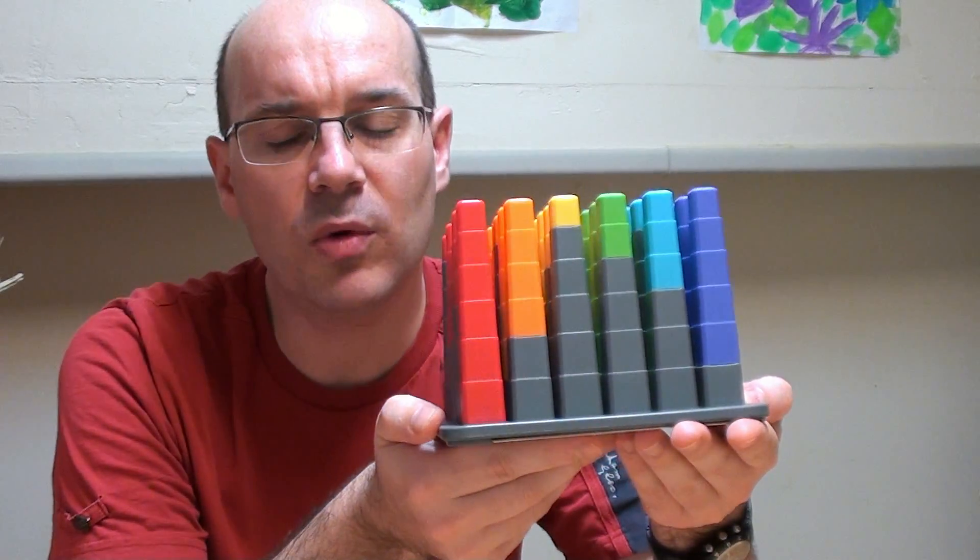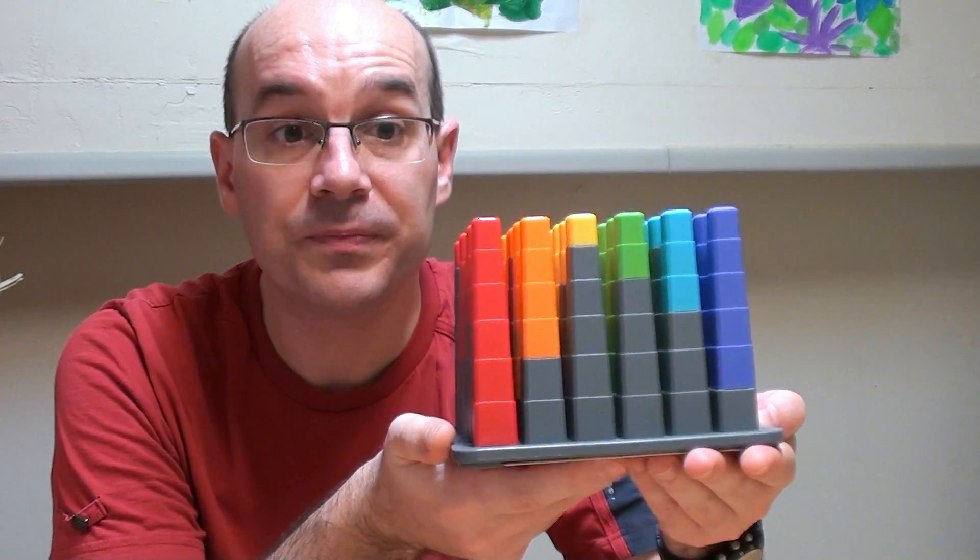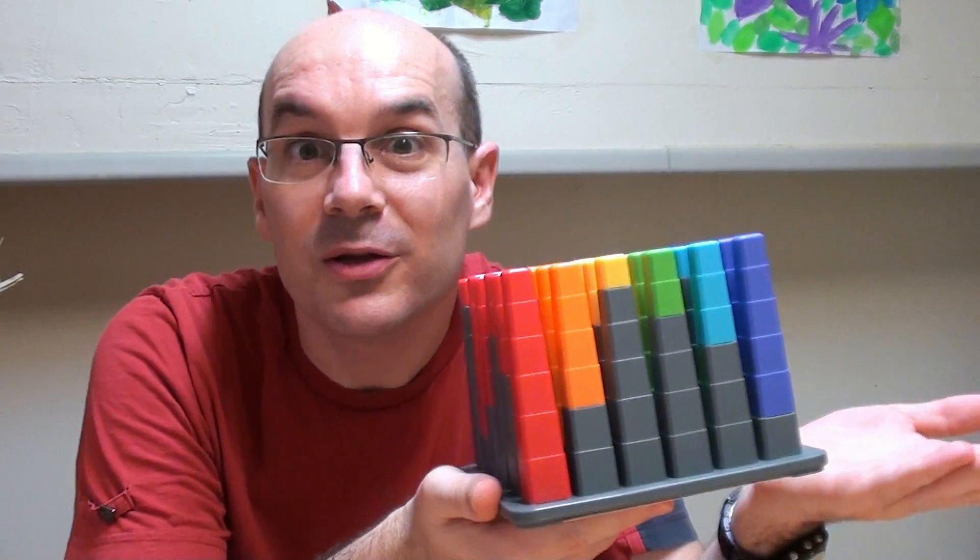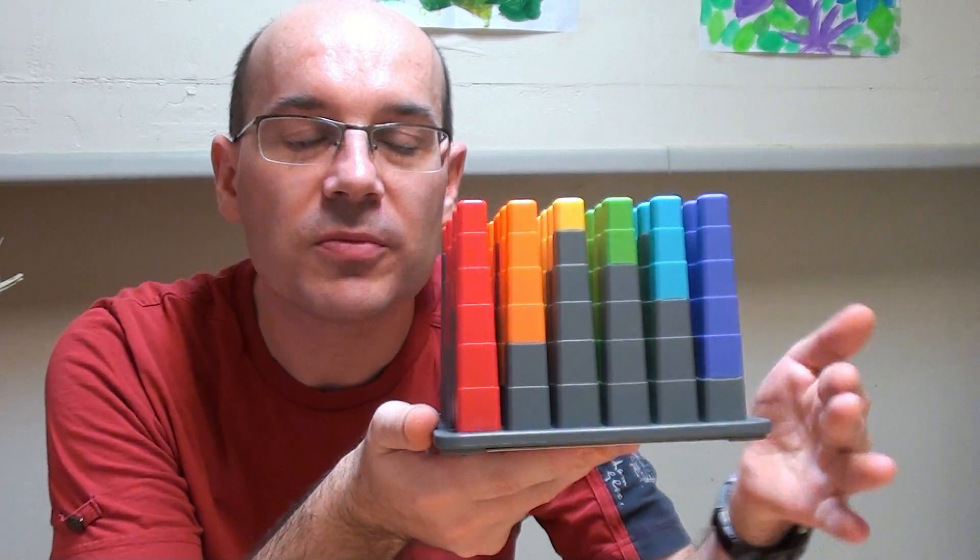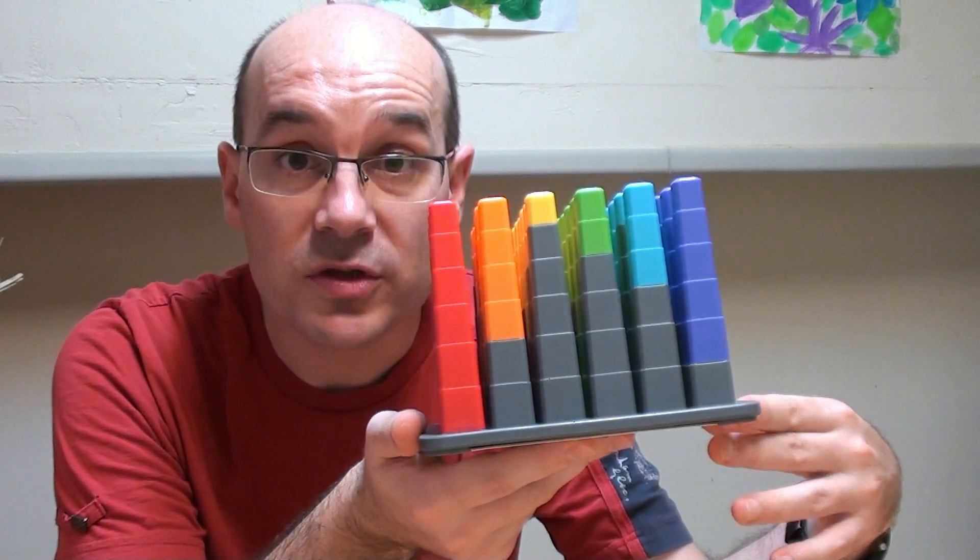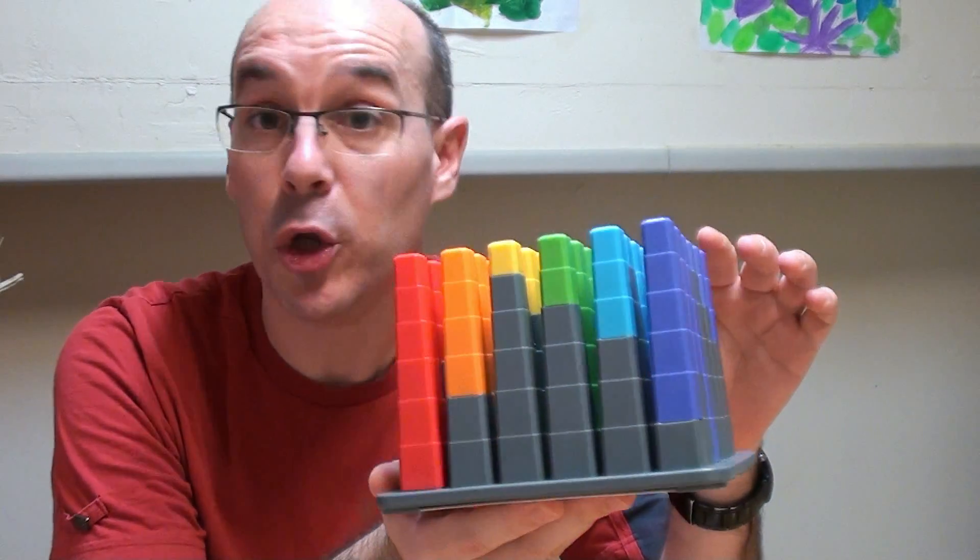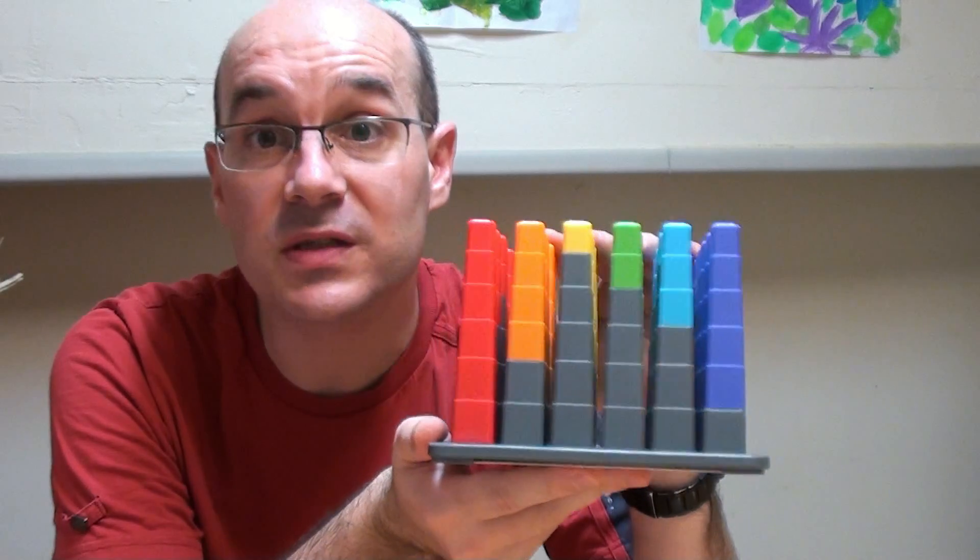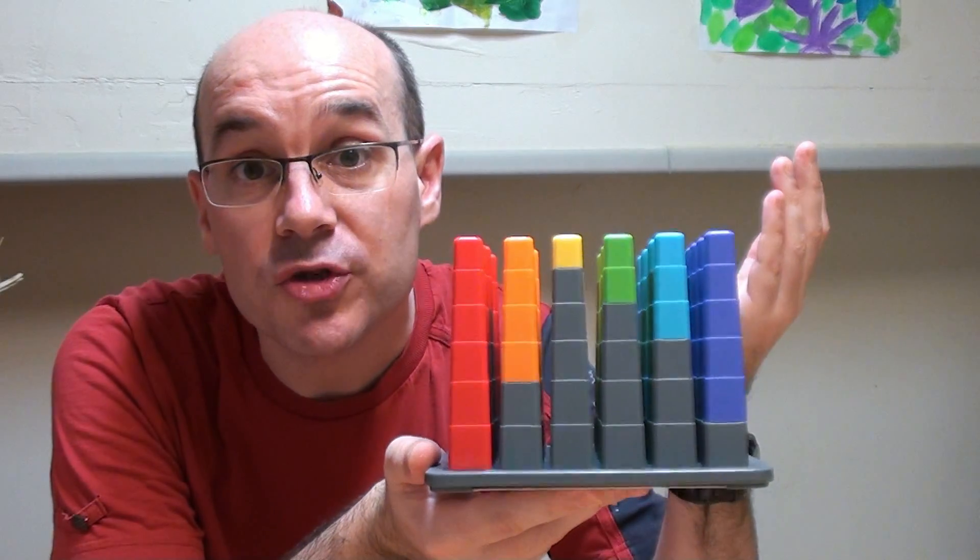So you might think, well, according to your mathematical knowledge, there's a problem called Euler's 36 soldiers problem, which is known to have no solution. So this thing should not have any solution.